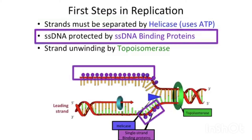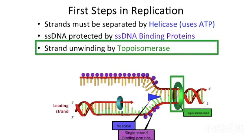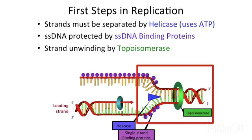As helicase separates the strands, you have single-stranded DNA, which is vulnerable. So it's protected by single-strand DNA binding proteins. Also, as you unwind, you overwind the DNA ahead of the fork. So, to relieve the torsion, there's a family of proteins called topoisomerases. There are multiple types of topoisomerases, but their role is to relax the strands back to a normal winding density.